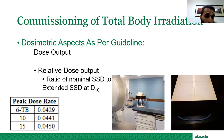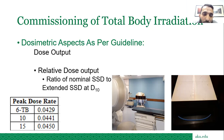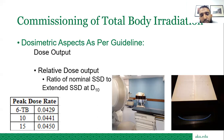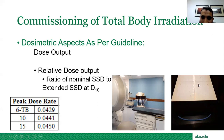For dose output, we measured relative dose output — the ratio of dose output at nominal SSD to dose output at extended SSD. The dose rates obtained: 6X was 0.0429 cGy/MU, 10X was 0.0441 cGy/MU, and 15X was 0.0450 cGy/MU. We exposed the same cable length at nominal SSD and used a Farmer chamber for measurement.